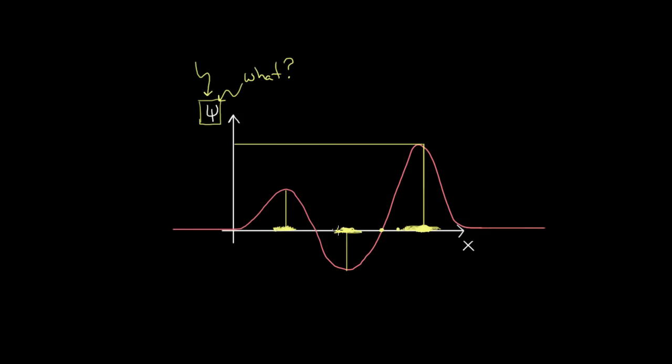Yes, they know that the square of it gives you the probability of finding the electron in some region, but people differ on how they're supposed to interpret it past that point. For instance, is this wave function the wave function of a single electron? Or is this wave function really the wave function of a system, an ensemble of electrons, all similarly prepared that you're gonna do the experiment on? In other words, does it describe one electron or only describe a system of electrons? Does it not describe the electron at all, but only our measurement of the electron?